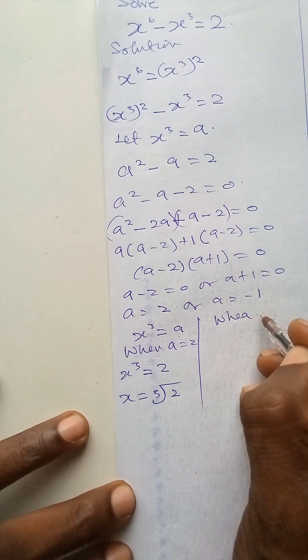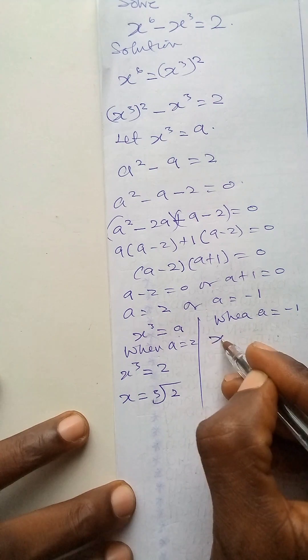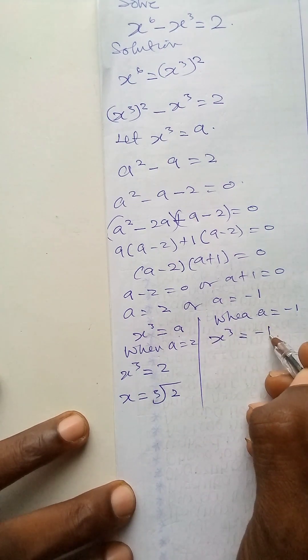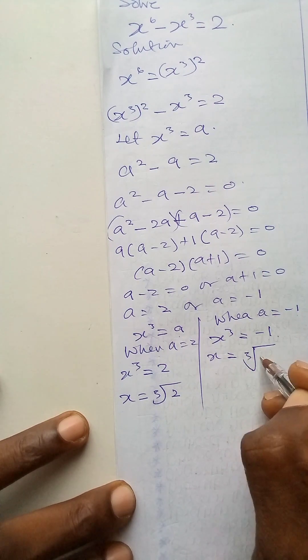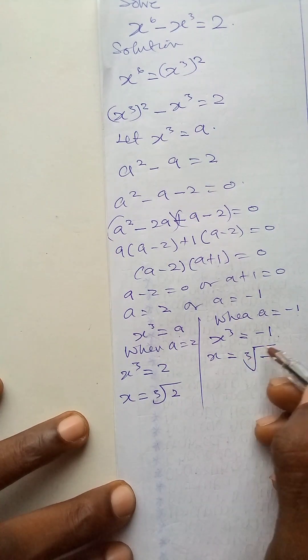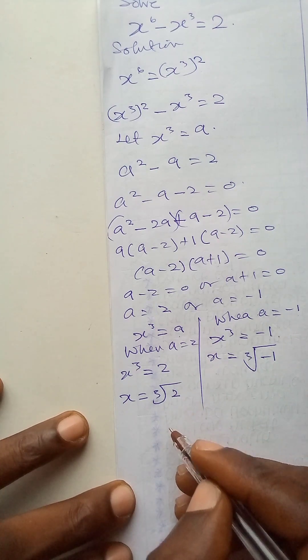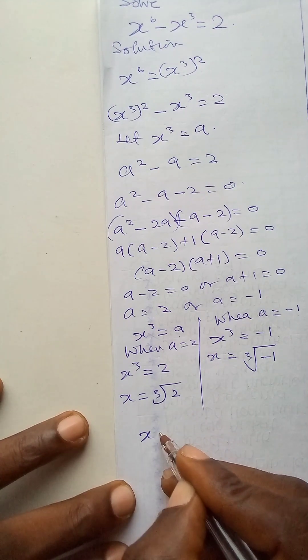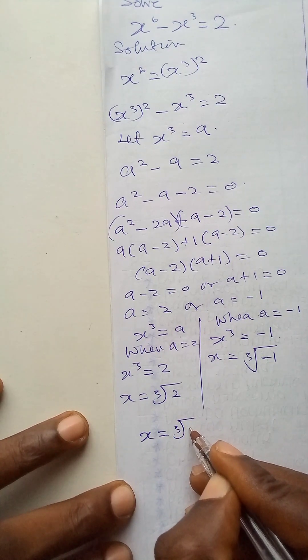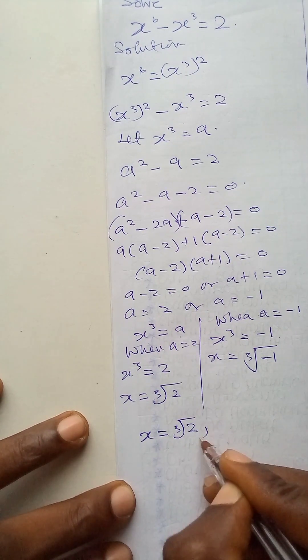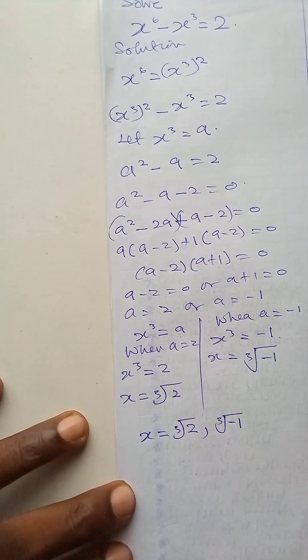And when a is minus 1, then x to power 3 is minus 1. And x will now be the cube root of minus 1. This is a complex number. So the answers are x is cube root of 2 or cube root of minus 1.